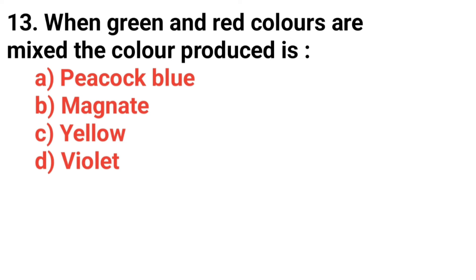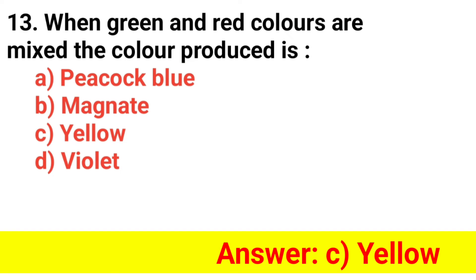Question 13. When green and red colors are mixed, the color produced is? Answer option C — Yellow.